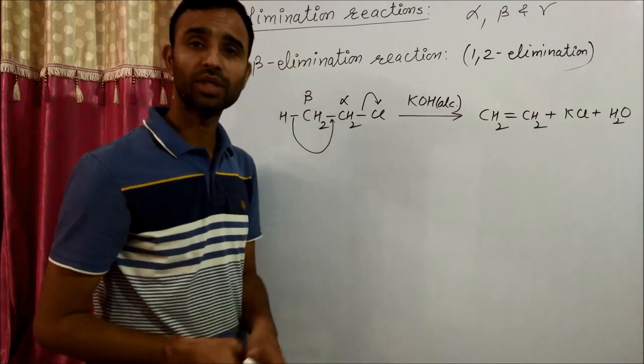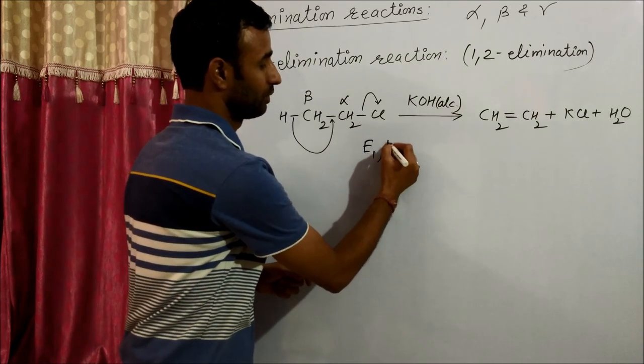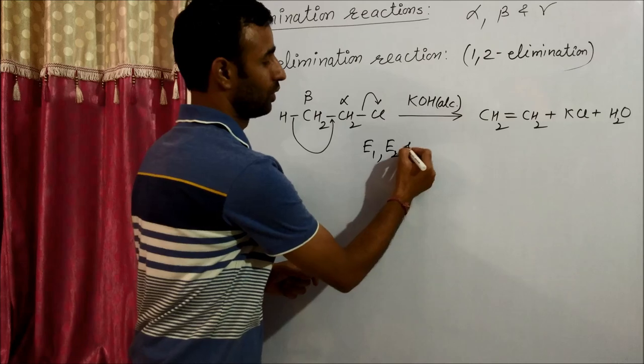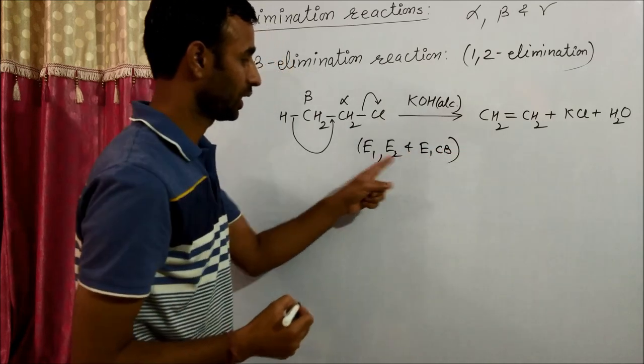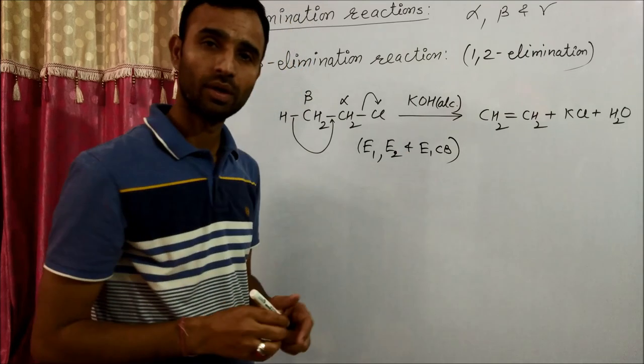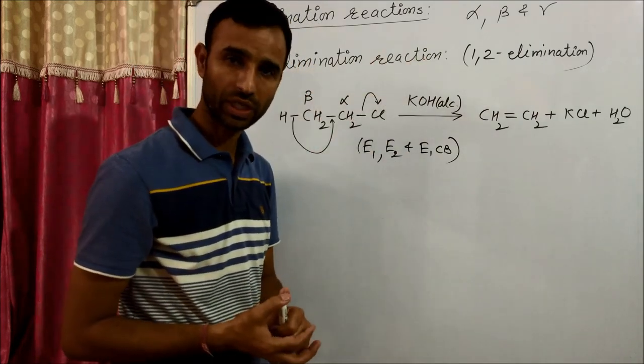This beta elimination reaction is of three types: E1, E2, and E1CB. These three types of reactions are part of beta elimination reaction.